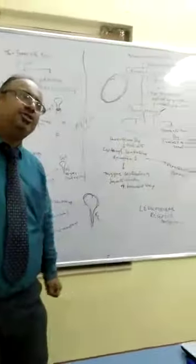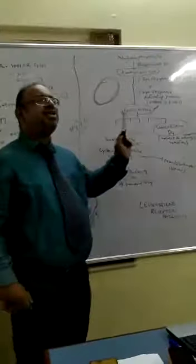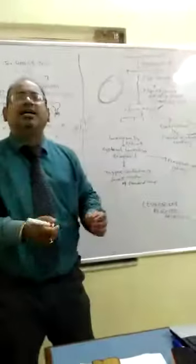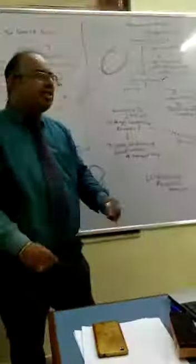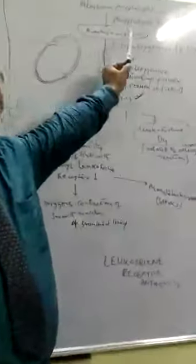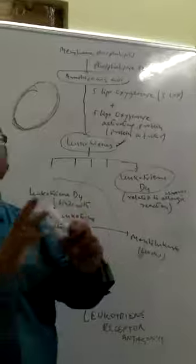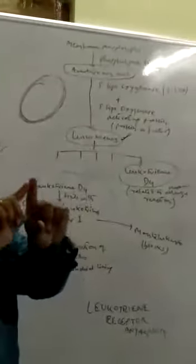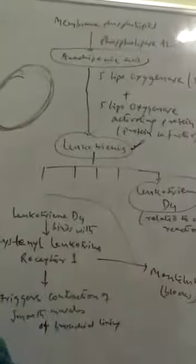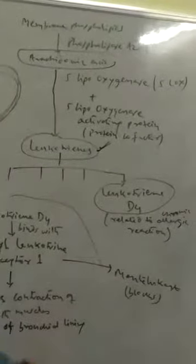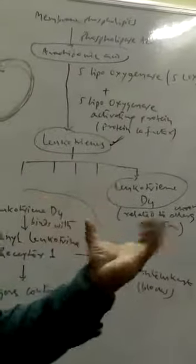Now let us talk about chronic allergic reaction. What is a chronic allergic reaction? We know that the cell membrane is made of phospholipids. These membrane phospholipids react with the enzyme phospholipase A2, which acts on the membrane phospholipids to produce arachidonic acid.